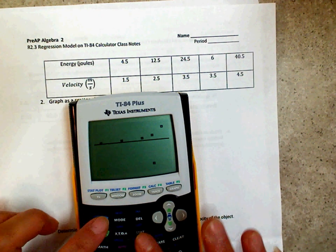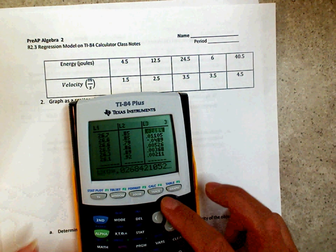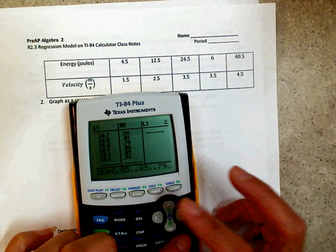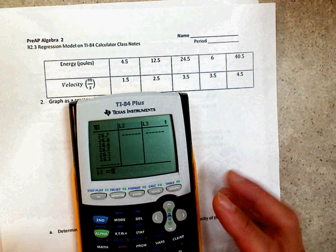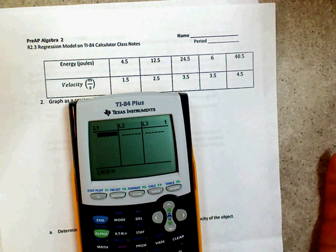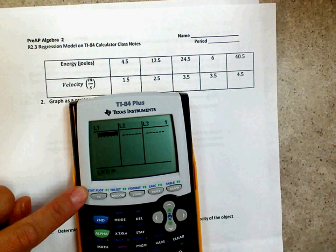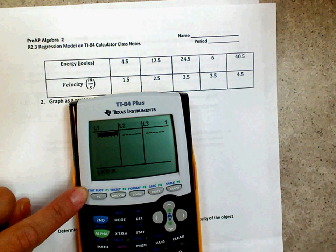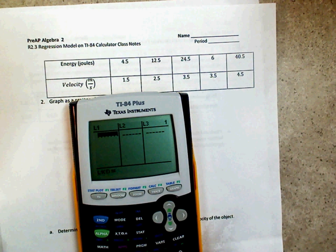You can do it this way. You can hit stat, hit enter, and clear just like this, each one of these. Or you can start all over by hitting 2nd plus 712. If you do that method, you'll have to turn on your stat plot and you'll also need to turn on your diagnostics. Just thought I'd let you know.